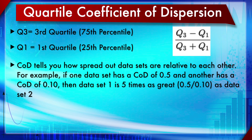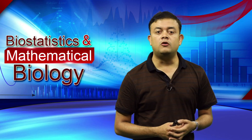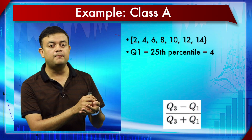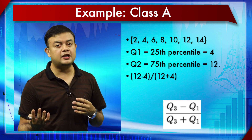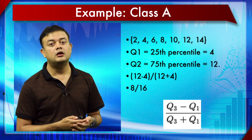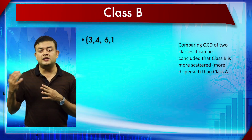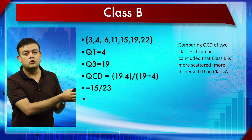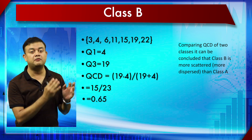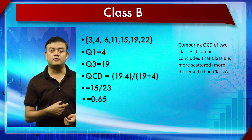The Quartile Coefficient of Dispersion tells you how spread out data sets are relative to each other. For example, if one data set has a QCD of 0.5 and another has 0.1, the first is five times more scattered. In a worked example: Class A yields a QCD of 0.5, while Class B yields 0.65, meaning the variability in Class B is larger than in Class A.